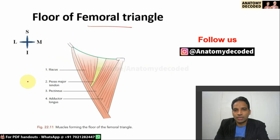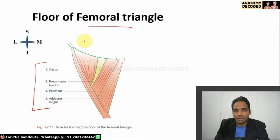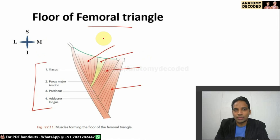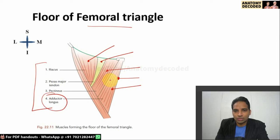The floor of the femoral triangle is formed by four muscles. From medial to lateral: adductor longus, then pectineus, then the tendon of psoas major, and then iliacus muscle. Note that adductor longus is included in both the medial boundary and the floor, because only its medial border forms the boundary while the remaining muscle bulk contributes to the floor.